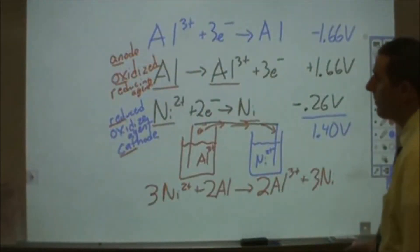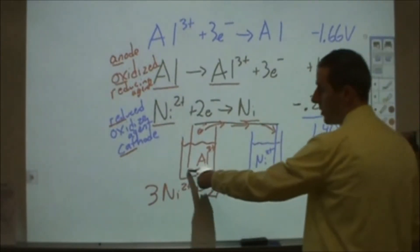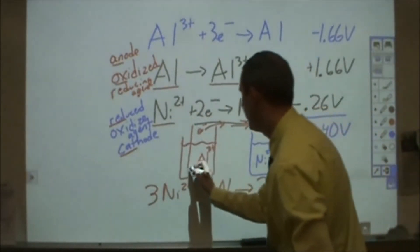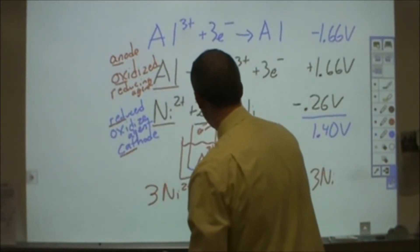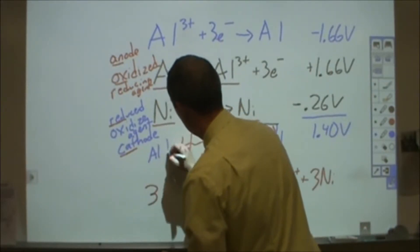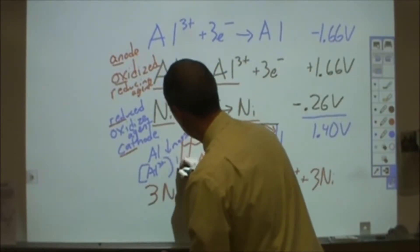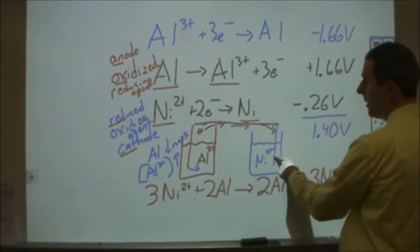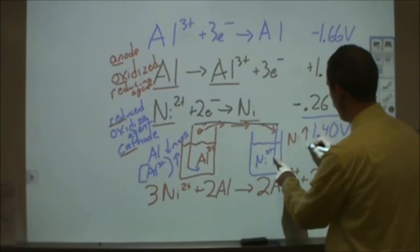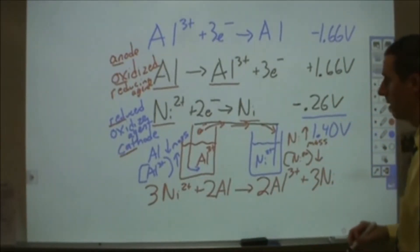Looking at what's physically happening: the aluminum metal is turning into aluminum ions in solution, so over time this electrode decreases in mass and the concentration of aluminum ions in solution increases. On the other side, nickel ions are turning into nickel metal, so the nickel electrode increases in mass and the concentration of nickel ions decreases.